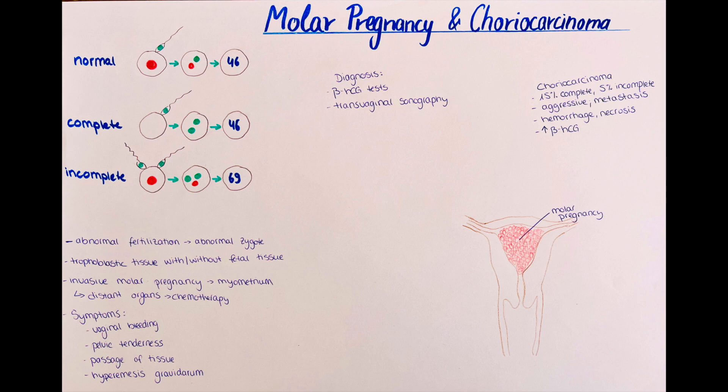In severe cases, a hysterectomy can be done as a last resort if bleeding cannot be stopped. In case of an invasive mole, chemotherapy is usually performed. In low-risk cases, methotrexate and folic acid are given. In high-risk cases, chemotherapy follows the EMA-CO scheme, which consists of five medications: etoposide, methotrexate, actinomycin, cyclophosphamide, and vincristine.